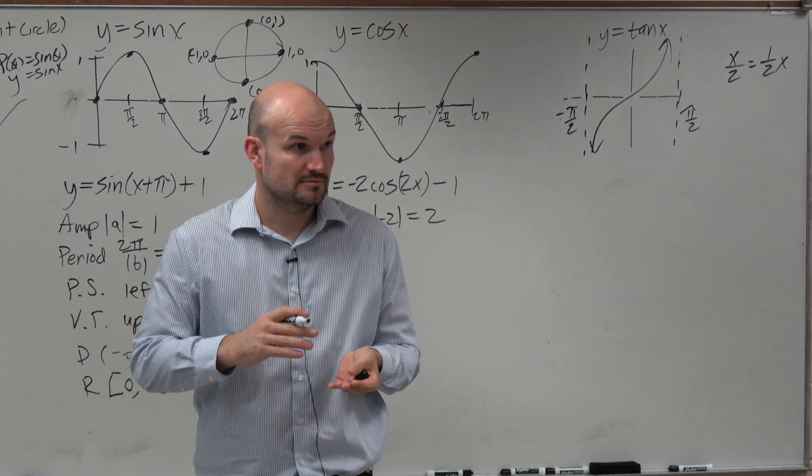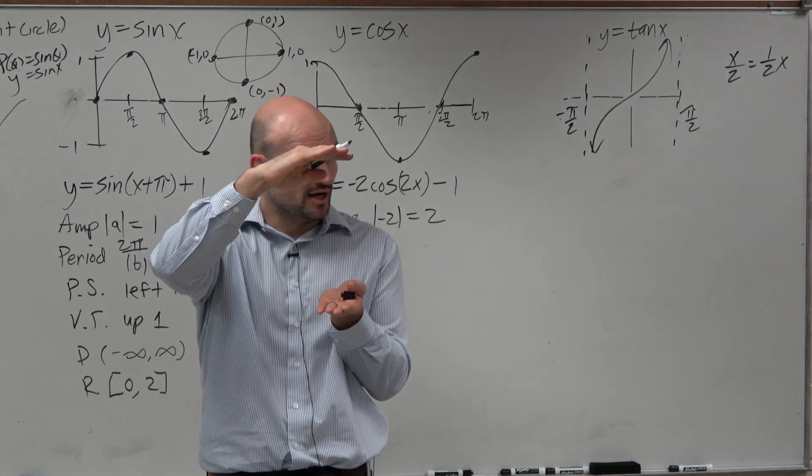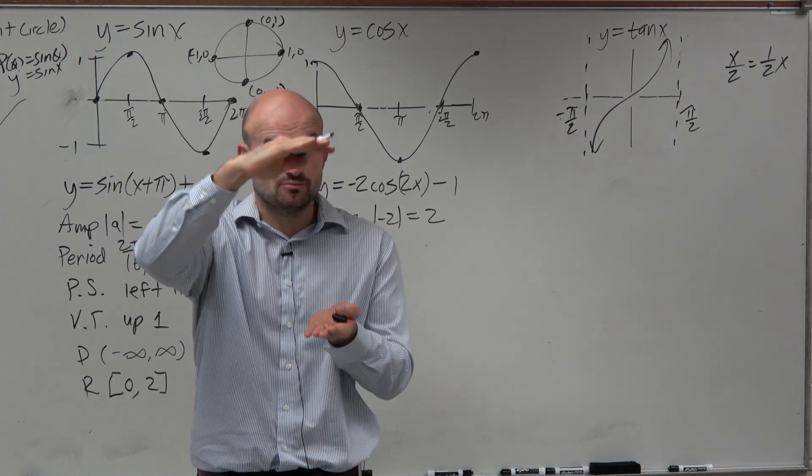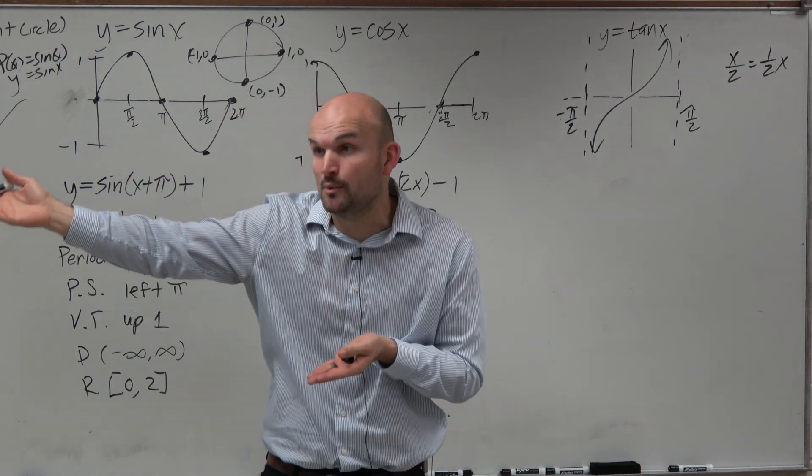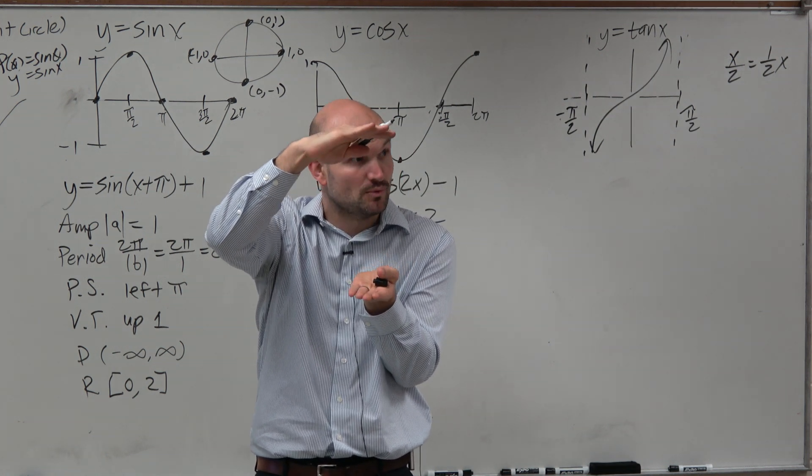So again, the amplitude now, the half distance is from the max to the min. It was 1, and now it just got stripped of 2. So basically, the graph got stretched. And again, you guys remember when I did the transformations on Desmos. When the amplitude was 1, it went down to negative 1, up to 1.